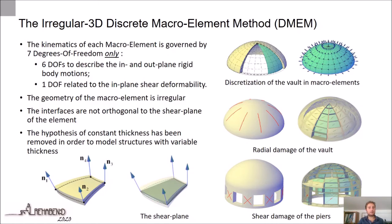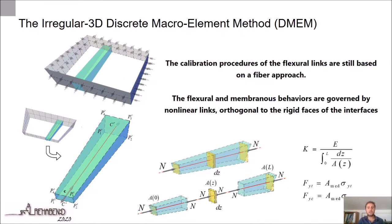The irregular 3D macro-element with interfaces on all edges introduced the 3D interaction on all edges of the macro-element. The last version of the regular 3D discrete macro-element is based on the following hypotheses: the kinematics of each macro-element is governed by 7 degrees of freedom only — 6 degrees of freedom to describe the in- and out-of-plane rigid body motions, and 1 degree of freedom related to the in-plane shear deformability. The geometry of the macro-element is regular, the interfaces are not orthogonal to the shear plane of the element, and the hypothesis of constant thickness has been removed in order to model structures with variable thickness. The calibration procedures of the flexural links are still based on a fibre approach, and the flexural and membrane behaviours are governed by non-linear links orthogonal to the rigid phases of the interfaces.